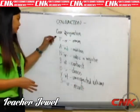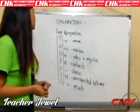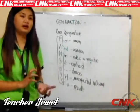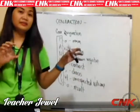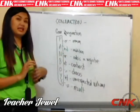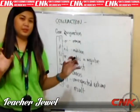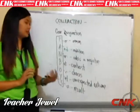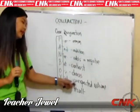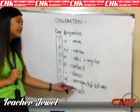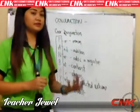We use FANBOYS when we are writing a compound sentence. We use 'for' when we are trying to reason out. We use 'and' when we want to add related ideas. We use 'nor' when adding a negative in a compound sentence. 'But' is for contrast — it's like the opposite. 'Or' is used for choices — it's like an option. 'Yet' is for the unexpected outcome, meaning an unexpected result. And 'so' is used for the result of something.